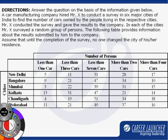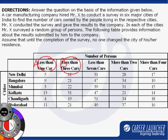We see the different column headings as: less than 1 car, less than 3 cars, less than 7 cars, more than 2 cars, and more than 4 cars. We will denote less than 1 car with variable A, less than 3 cars with variable B, less than 7 cars with variable C, more than 2 cars with variable D, and more than 4 cars with variable E.